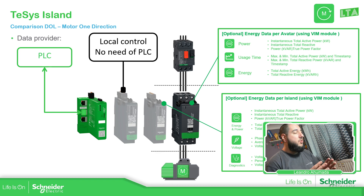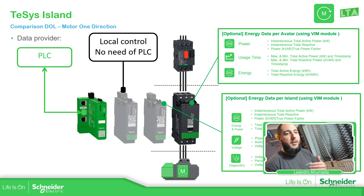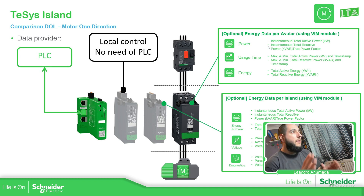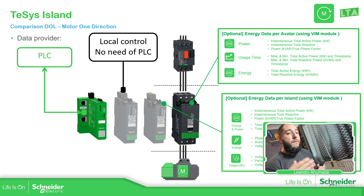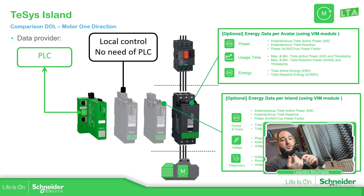Then we have the voltage interface module, shown here — I put it as transparent because it's not mandatory, but we can have it for further information about voltage. It connects to the same power supply and reads the data, then calculates all the power and energy, as well as voltage measurements. If I have more than one starter or avatar, we have the possibility to measure the complete island information with just one voltage interface BIM module. For example, if you want to see the consumption of a motor using the traditional way, you'd probably need a power meter — but we can avoid that using this.